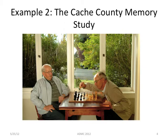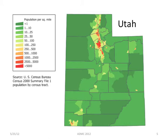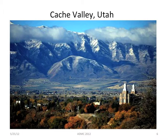The second study is a study on aging called the Cache County Memory Study. I live in Cache County — Utah State is in a little valley about 80 miles north of Salt Lake. Here's Utah: this is Salt Lake, this is Provo where BYU is, and we're up here in a little valley — that's Cache Valley. Not very many people up there, but it's kind of pretty. That's what the valley looks like, and probably right now we still have snow on the mountains.